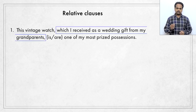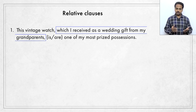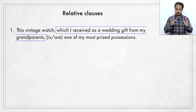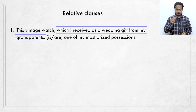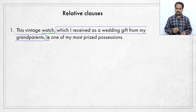Look at the clause which I received as a wedding gift from my grandparents. What is the purpose of that clause? What did I get as a wedding gift from grandma and grandpa? I received the vintage watch. So this clause only gives information about the watch — it gives you some details about it. So in fact, this whole clause acts like an adjective. For this reason, it's called an adjective clause, more commonly referred to as a relative clause. So that means the real subject is watch. Grandparents is not the subject. The word watch is a singular noun, so this vintage watch, which I received as a wedding gift from my grandparents, is one of my most prized possessions.